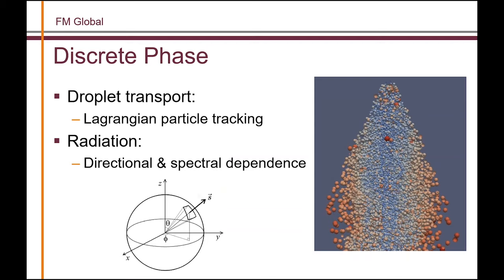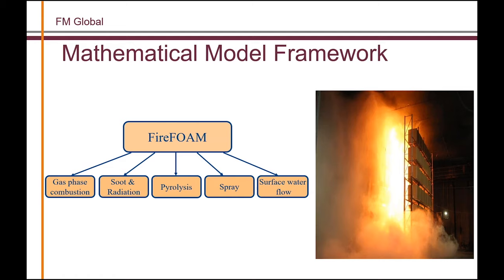In addition to the overall mesh zones, we also solve the discrete phase — the transport of droplets tracked in a Lagrangian way. Their drag, heat transfer, and evaporation process need to be captured. On top of that, there is a radiation calculation, which depends not only on the spatial mesh but also on direction and wavelength. This is a very complex mathematical implementation of all the different physics, and together they are put into the mathematical framework within FireFOAM to capture the fire suppression phenomenon.